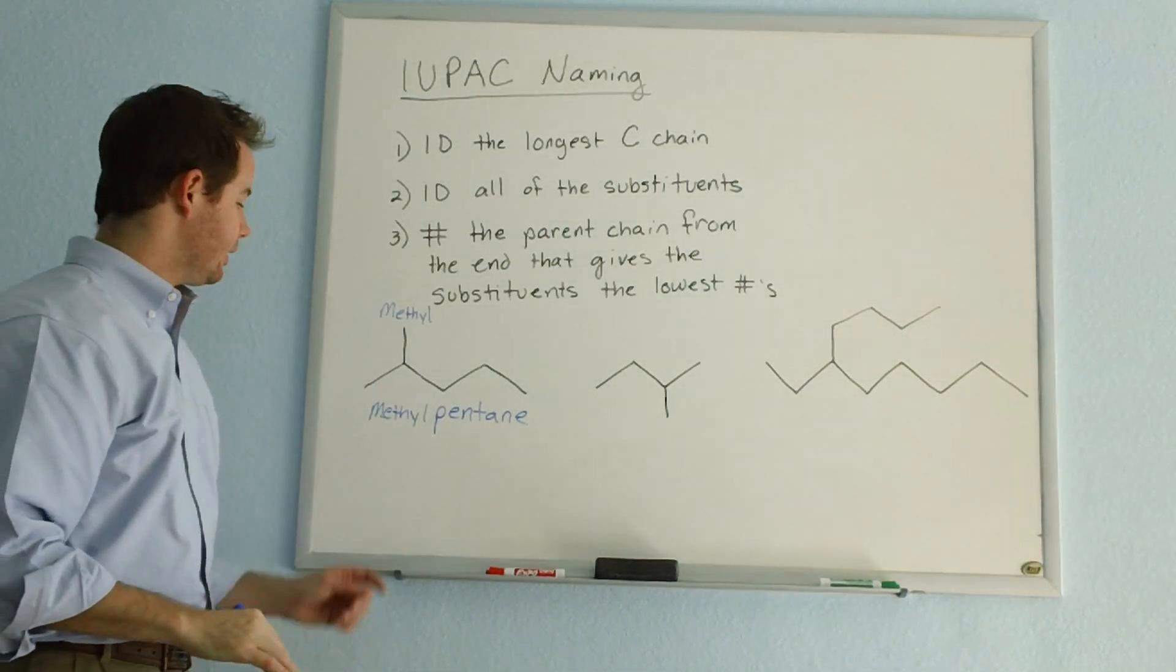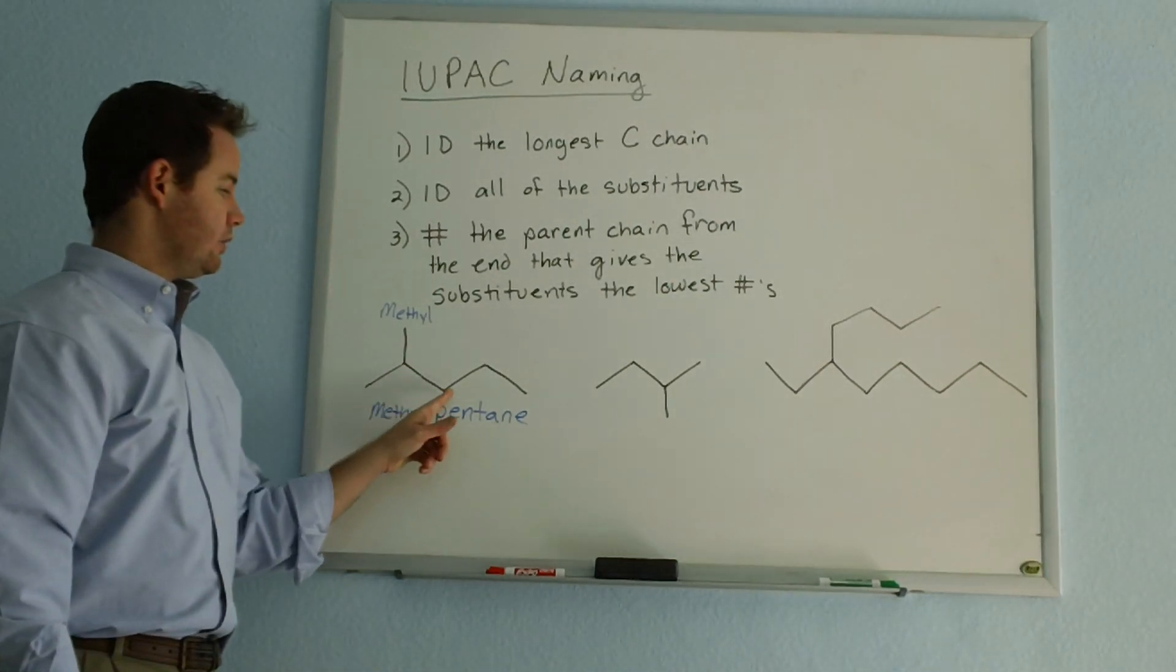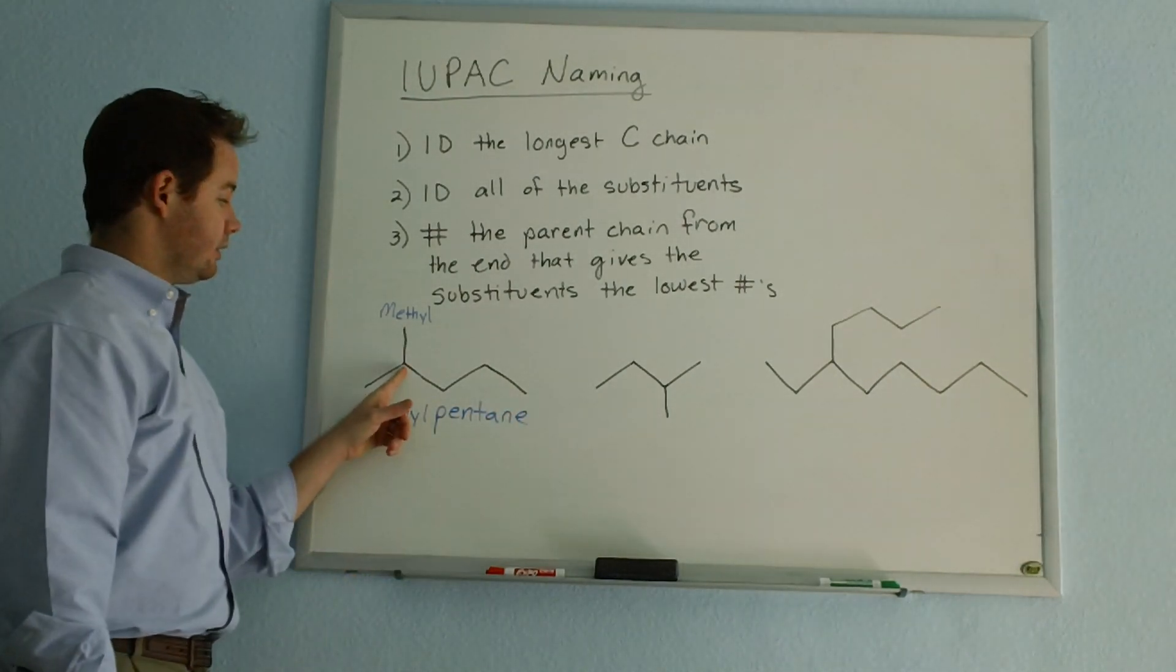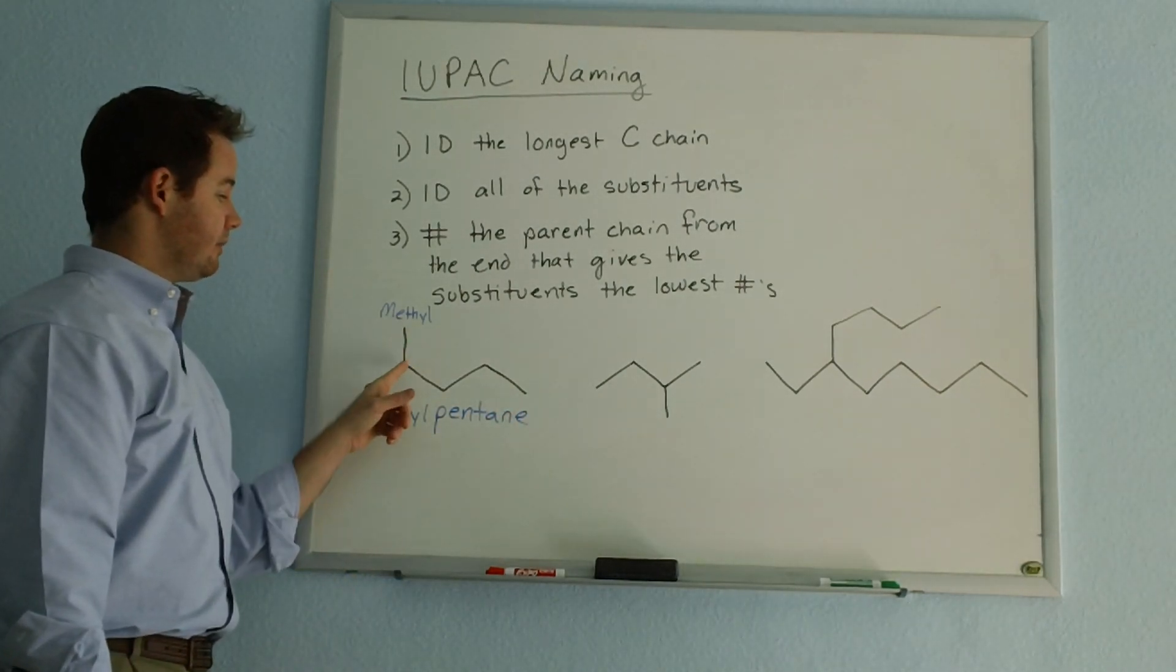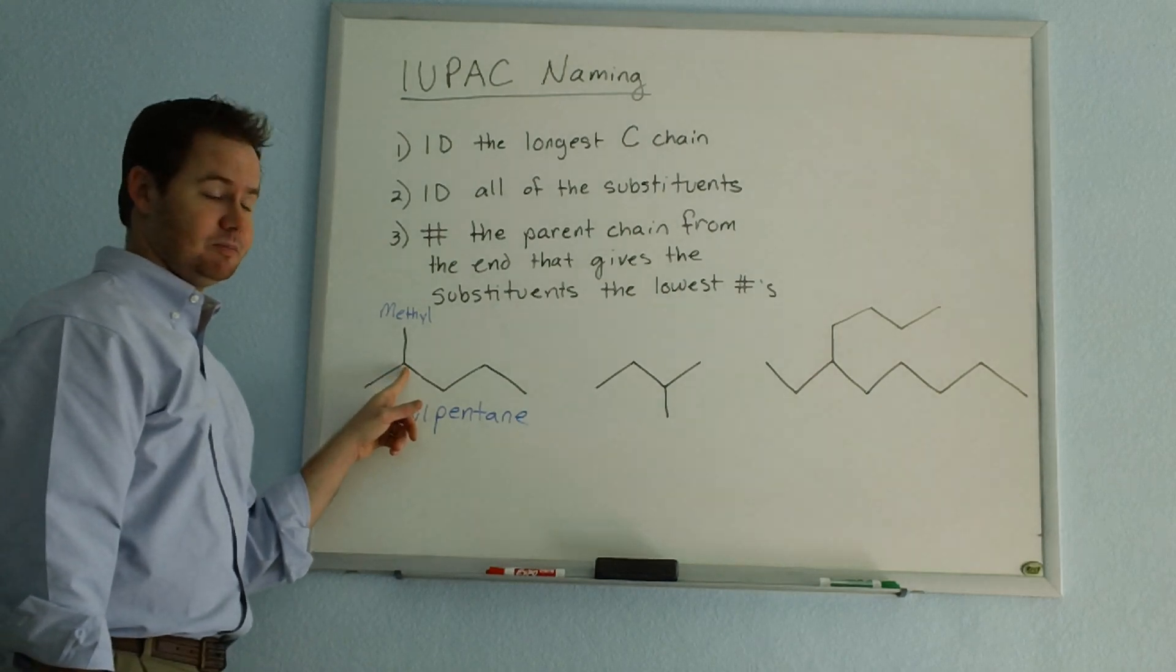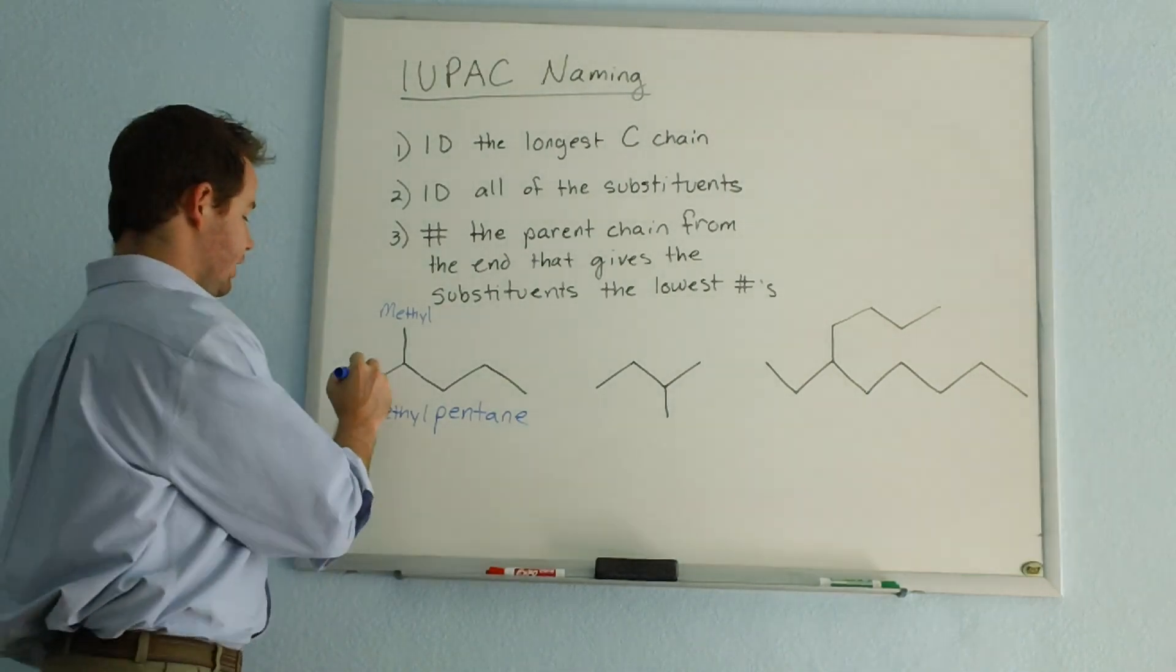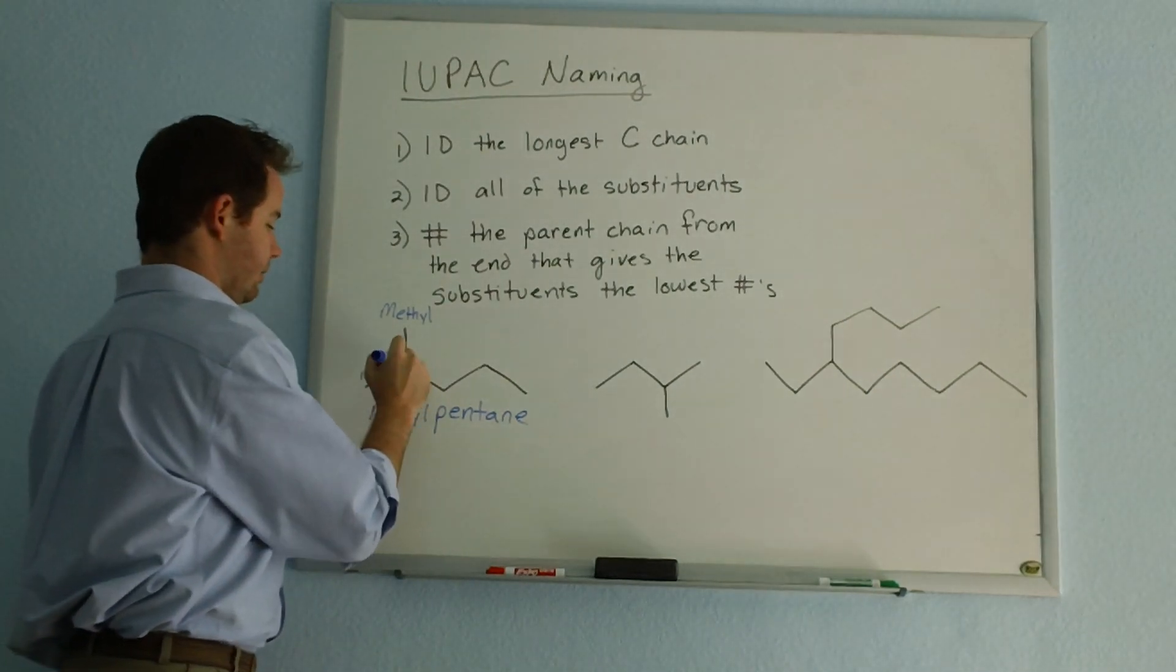Or we could number it one, two, three, four, five, which means that our carbon group here, the methyl, would branch off of carbon number two. Well, two is lower than four, and so that's going to be our preferred way of numbering this compound.